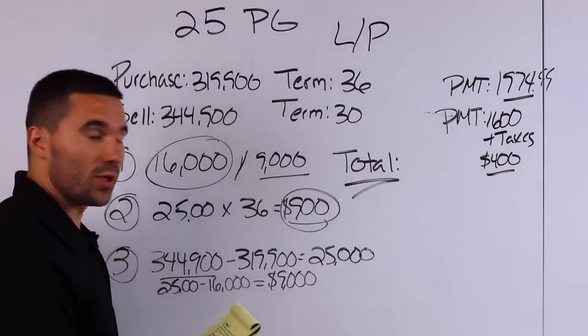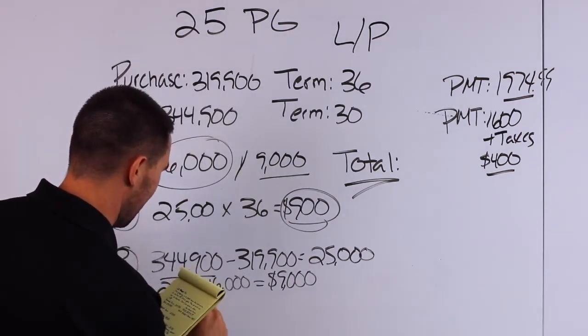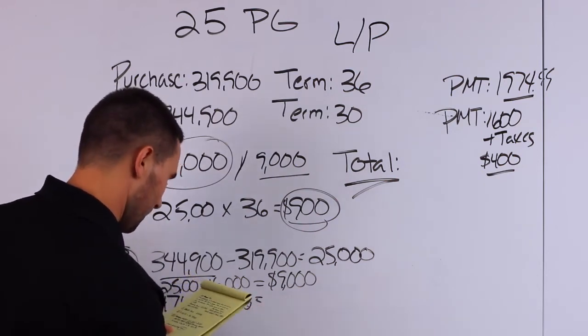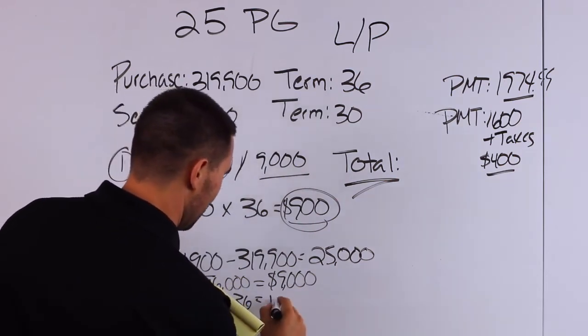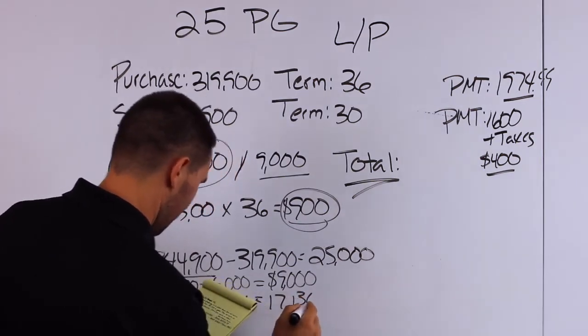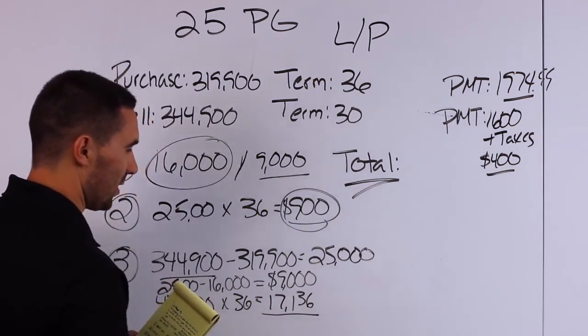$9,000 left from the premium. Plus we got a principal paydown of roughly $476 a month times 36 months, which is going to give you $17,136. So that's the principal over the last 36 months.